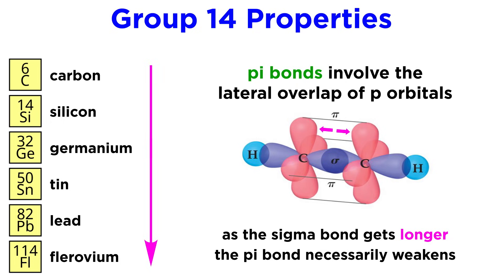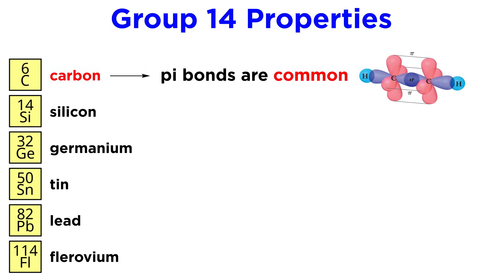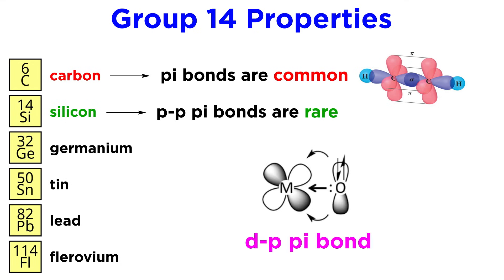As the covalent bond length increases, this weakens the interaction, thus while pi bonds are very common between carbon atoms, they are already quite rare between silicon atoms. On the other hand, pi bonding between one p orbital and one d orbital is also possible, and this actually strengthens going down the group as these orbitals get bigger, due to the angle in which the lobes of the d orbitals project and the resulting enhanced overlap with the p orbital.